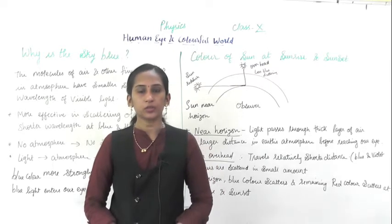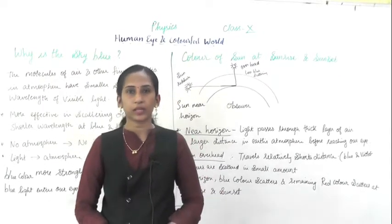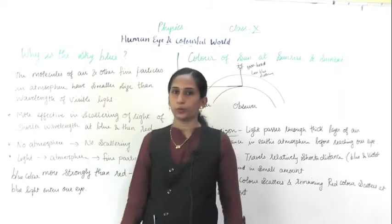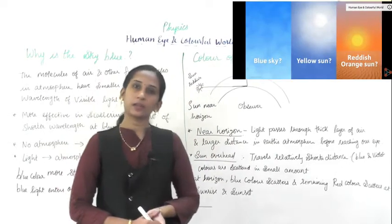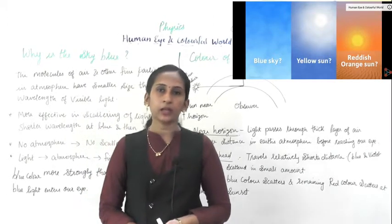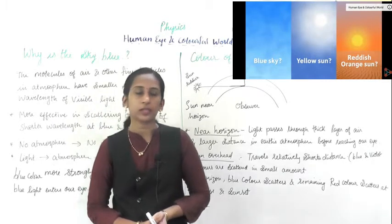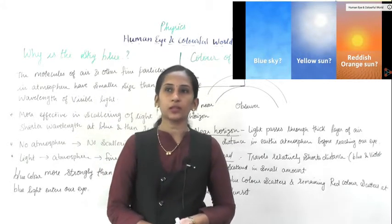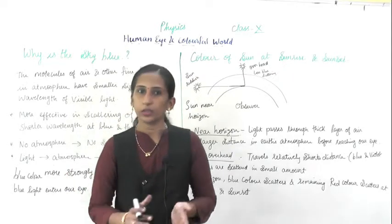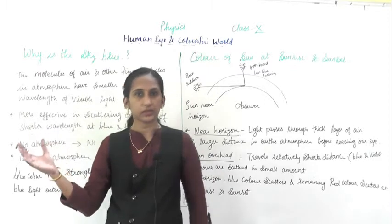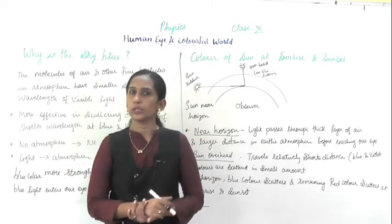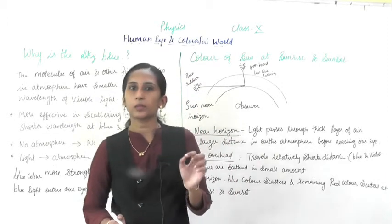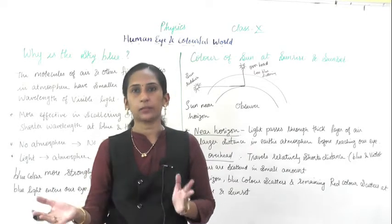Now we are going to study two important questions: why the sky is blue, and the color of the sun at sunrise and sunset. When you go out at morning around 9 to 11 o'clock, the sun appears blue in color. Why can you see the sun blue? As there are seven colors in white light, why only blue color? As you have studied the scattering of light, the small particles are in the atmosphere and when light strikes them, it scatters blue color — same reason here.